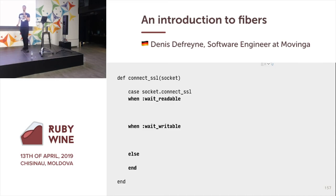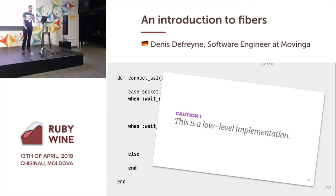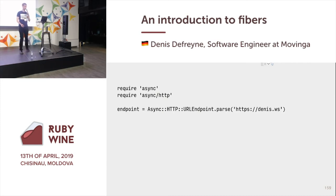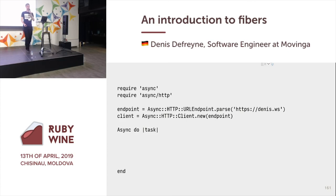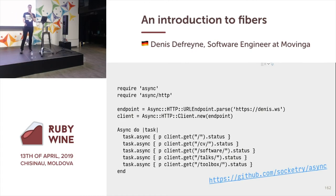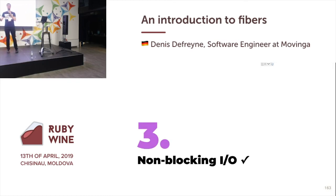This is what I meant when I said this is a low-level implementation. In a real-world situation you would use a library. A library you can use is async — you require it, create an endpoint for a particular URL, create a client, and then asynchronously fetch a bunch of pages and print their status. This async gem uses fibers, uses non-blocking I/O, one thread, and you can still do concurrent things. This is efficient non-blocking I/O.